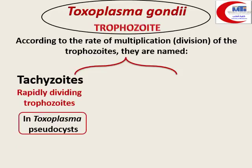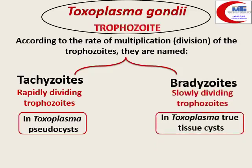If the trophozoite is rapidly multiplying, we call it a tachyzoite, found inside a pseudo cyst — which is essentially a nucleated cell the parasite entered and began dividing rapidly in, surrounded by the cell membrane. When the immune system develops and division slows, we call it a bradyzoite, found inside a true cyst.